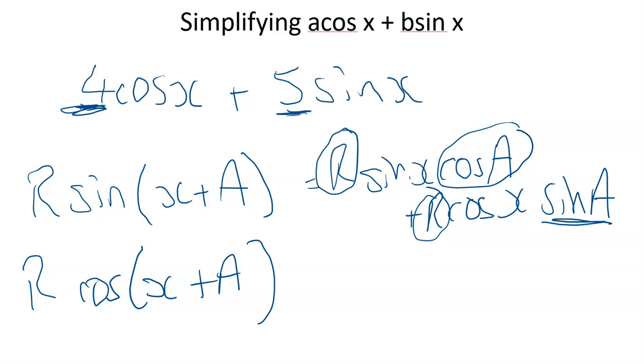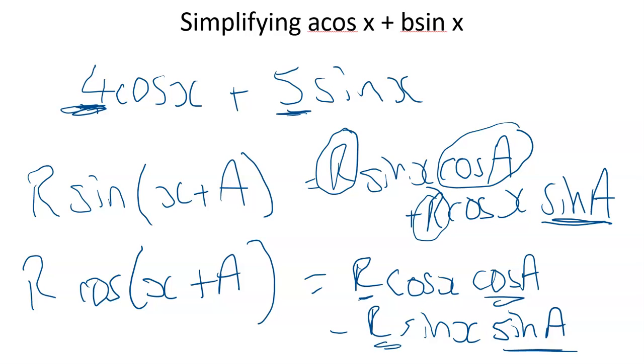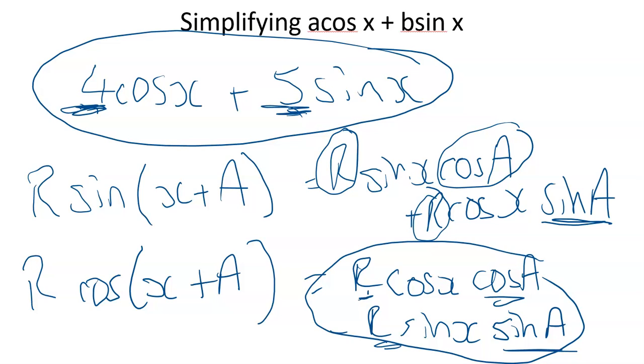We can do it with cos as well, because this is R*cos(x)*cos(A) minus R*sin(x)*sin(A). In this situation, the R*cos(A) are going to be 4, and the R*sin(A) needs to be 5, just by looking at the coefficients.